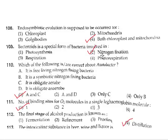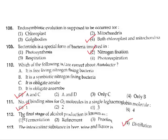Question 109: Bacteroids is a special form of bacteria involved in nitrogen fixation. Correct answer is option 2. Question 110: Azotobacter is a free-living nitrogen-fixing bacteria and it is an obligate aerobe. Correct answer is option 1 (A and C).